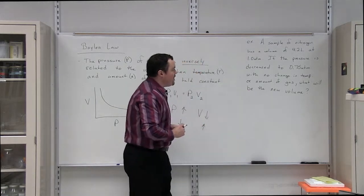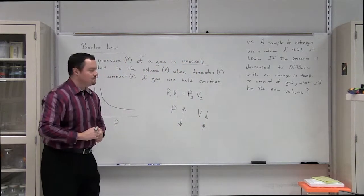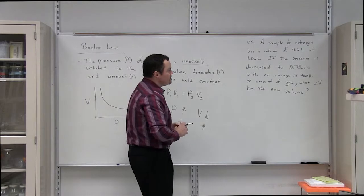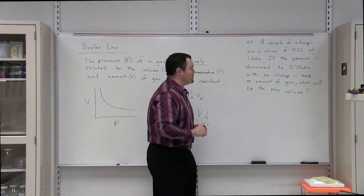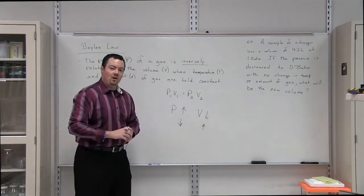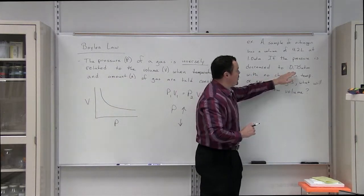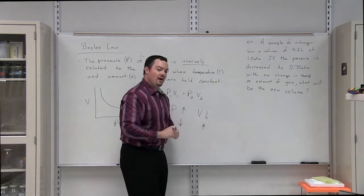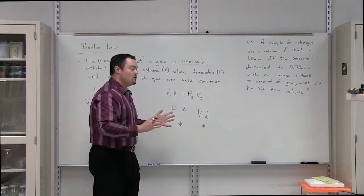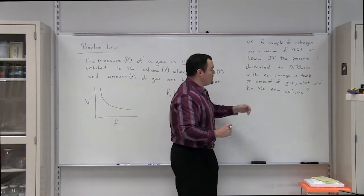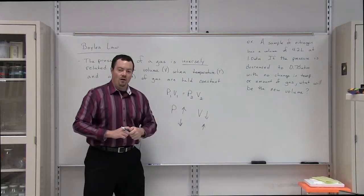If we look right here at this problem, we have a sample of nitrogen gas. This nitrogen gas has a volume of 4.2 liters and is at a pressure of one atmosphere. If we decrease the pressure to 0.75 atmospheres with no change in temperature and no change in the amount of gas, what will be the new volume?